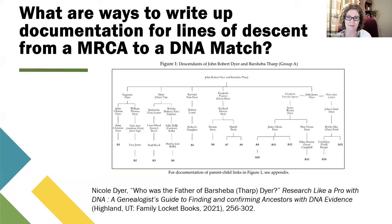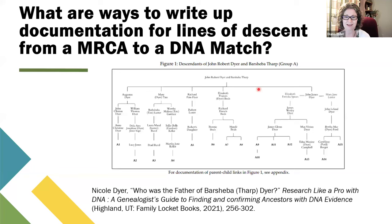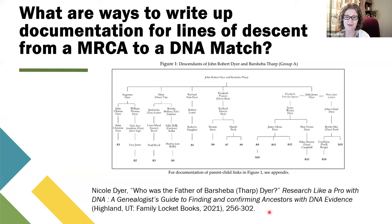We may have a beautiful table like this one that Nicole did for her proof argument on the father of Barsheba Tharp Dyer. We can't just put a document out here and expect everyone to believe that these lines are correct going back up to this ancestral couple. We have to do some kind of documentation and proof, but how do we do that? So we're going to spend just a few minutes giving you some ideas and discussing this whole issue.